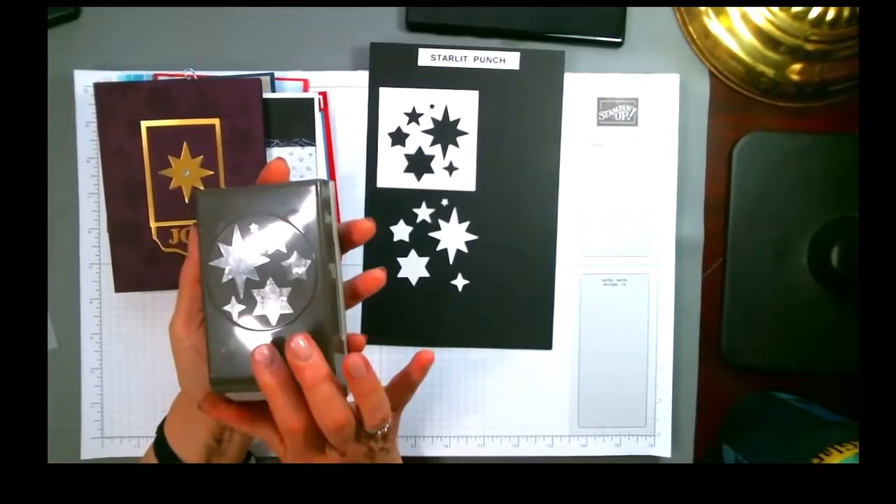So I hope I gave you a lot of ideas for using this. This is in the catalog right now. Right now in the catalog this is just a standalone punch. We don't sell a stamp set that coordinates with it at all but there are lots of fun things that you can do with the stars that you get with the Starlit punch.